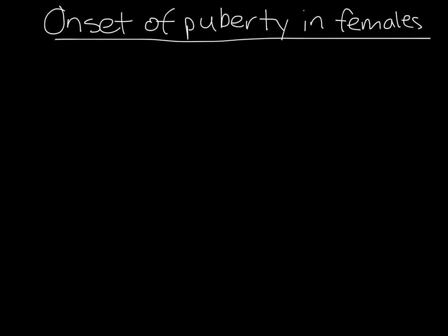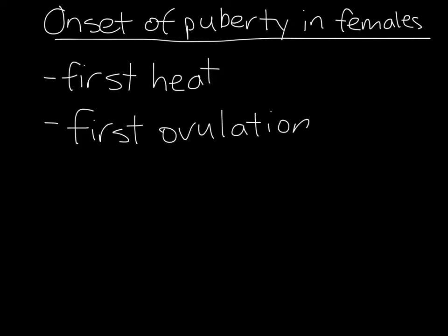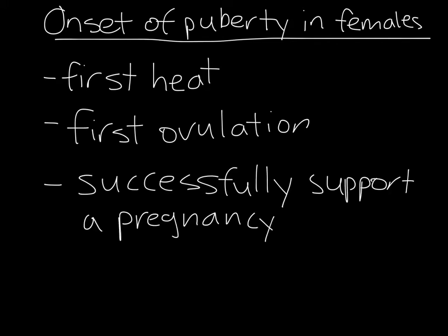There are many different ways to define the onset of puberty in both females and males. In females, you could describe puberty as the age at first heat, the age at first ovulation, or the age at which a female could successfully support a pregnancy without harming herself. The third definition is most commonly used because it's really the whole goal of the process. The first definition has the problem of silent ovulation, or ovulation without behavioral signs of being in heat, which is common in the first ovulation for heifers or ewes, and the second definition is useful but it requires frequent monitoring, which just isn't possible, so the third definition is the most practical for most production systems.